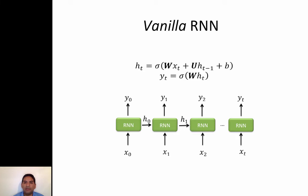So what is a simple RNN, sometimes called vanilla RNN? It's an activation function that takes in the input x_t at time t and the previous activation function at t-1. They're multiplied by parameters w and u, which are learned through stochastic gradient descent. We also include a bias term b, and they're modulated by the sigmoid function.